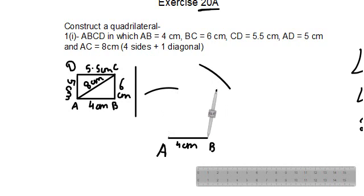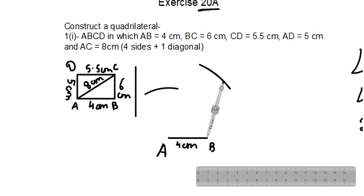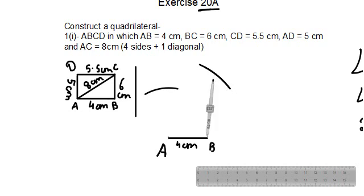Now put the needle of the compass on point B. From point B we will draw BC, which is 6 cm. Open the compass to 6 cm, then cut an arc that intersects the earlier arc drawn from point A for AC. This intersection locates point C.